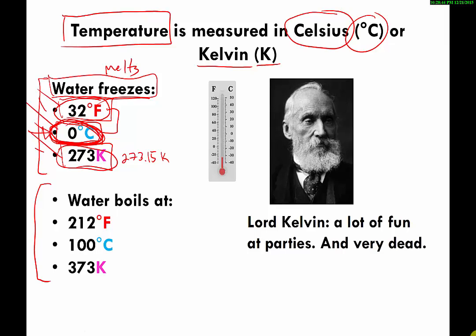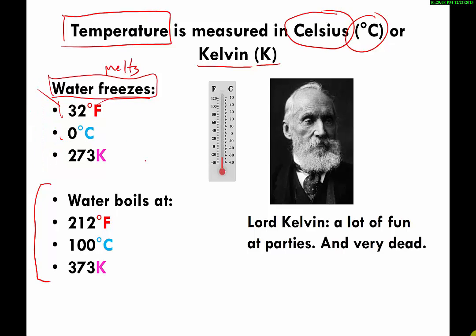Water freezes — and melts — at 32°F, 0°C, or 273 K; those are three different ways of saying the same thing. Converting from Celsius to kelvin is really easy: you just take the number in Celsius and add 273. So zero degrees Celsius plus 273 equals 273 kelvin.